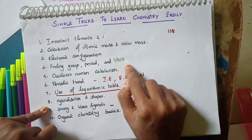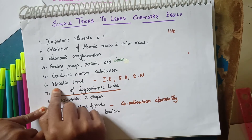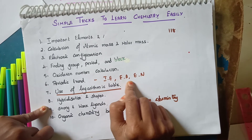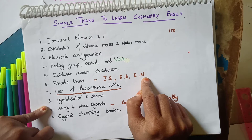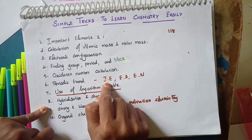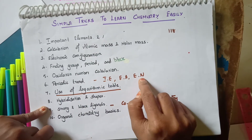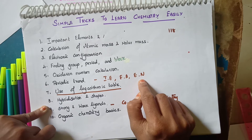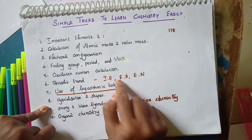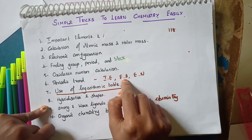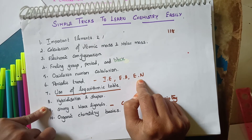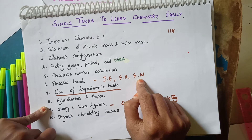The next basic is periodic trends — ionization enthalpy, electron affinity, and electronegativity. By knowing these periodic trends, it is easy to study the characteristics of elements in the periodic table. Without knowing how ionization enthalpy, electron affinity, and electronegativity behave across the periodic table, you cannot study the characteristics of elements in each block.